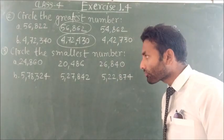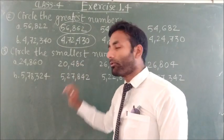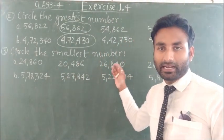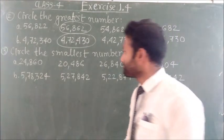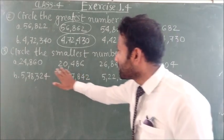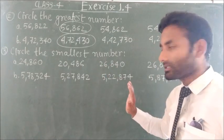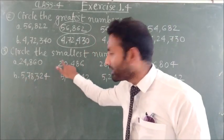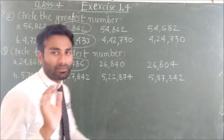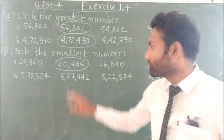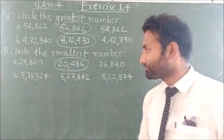Question number three: circle the smallest number. The numbers are 24,860, 20,486, 26,840, and 26,804. We can see that 24, 20, 26, and 26 - the smallest is 20. So 20,486 is the smallest number.